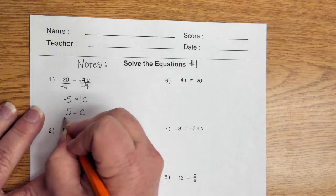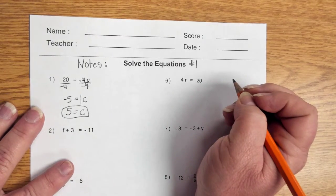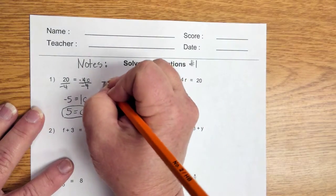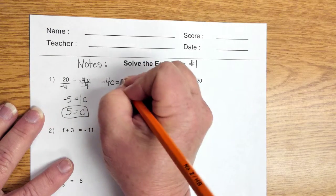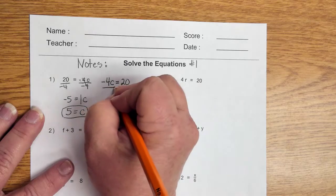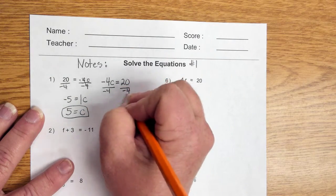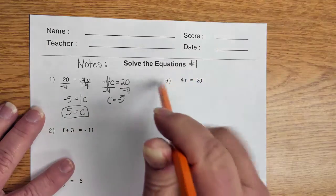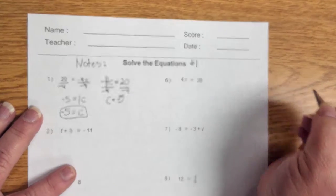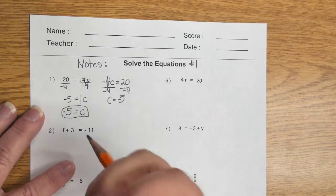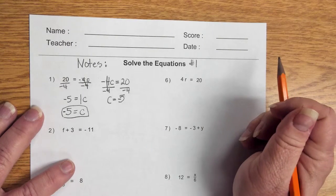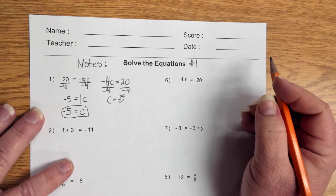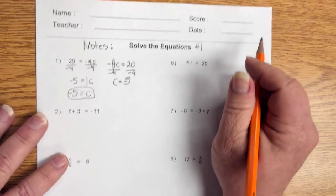Now, some people have problems solving when the variable is on the right-hand side. There is no reason in the world for this problem you couldn't rewrite it as negative 4c is equal to 20. It's going to give you the same thing, divide by negative 4, and you end up with c is equal to negative 5. So, if you need to rewrite it so the variable is on the left side, that's okay to do. You just want to kind of get more comfortable with the fact that the variable could be on either side. Let's do number 2.